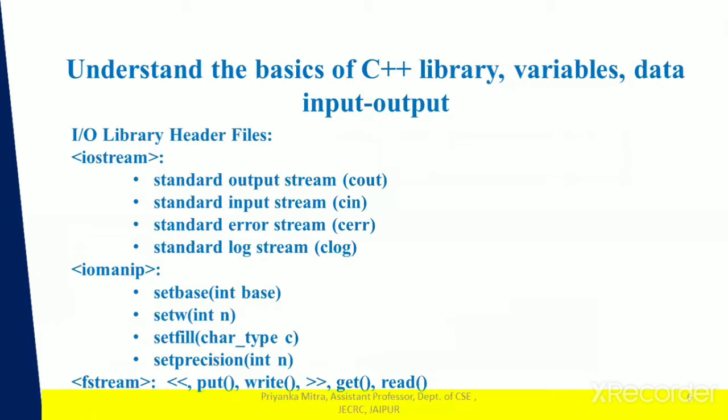If bytes flow from a device like a keyboard, a disk drive, or a network connection to main memory, then this is called an input operation. If bytes flow from main memory to a device like a display screen, a printer, a disk drive, or a network connection, then this is called an output operation.